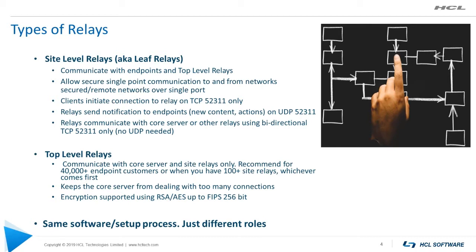The number one rule in running BigFix is never point your clients to the core server. This gives extra work to the core server that could be better spent on processing data about your environment. Think of it this way: the core server loves to delegate the busy work to relays and only deal with consolidated client reports that relays package up and send to it. If you had all your clients talking to your core server, not only would it be busier and slower, but it may even run out of TCP sockets and stop working altogether.